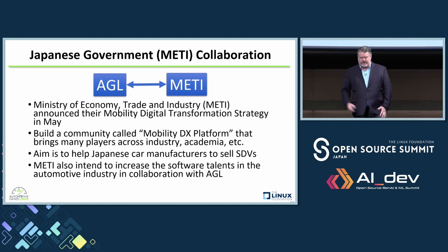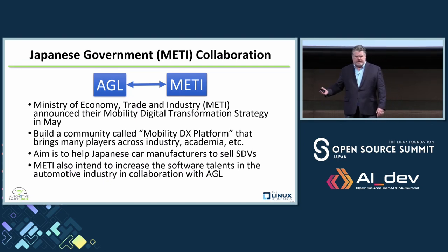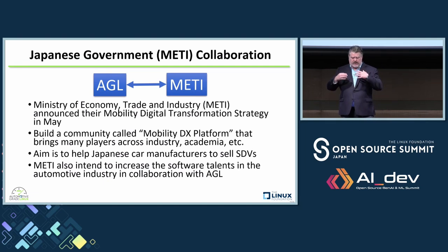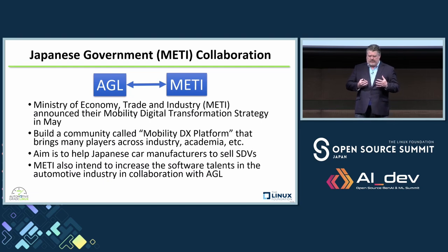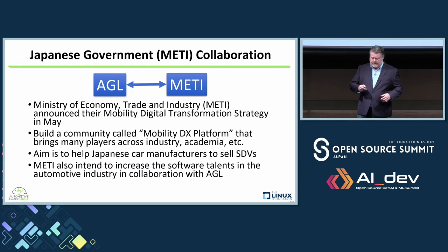AGL is also collaborating with METI — the Ministry of Economy, Trade, and Industry of Japan. They recently announced a mobility digital transformation strategy and approached AGL. The aim is to help automotive manufacturers of Japan and to increase software talent in AGL-based, Linux, and open source platforms in Japan. One key opportunity is that there's no formal definition of SDV, and METI would like us to help define what SDV means — giving us a critical opportunity to define the term for the industry and specifically the Japanese car industry.